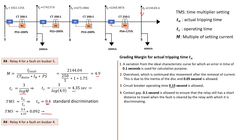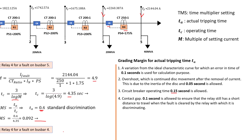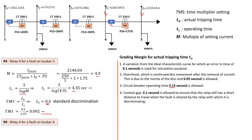Moving on, we go to relay four for a fault on bus bar four. The same relay must look out for a fault on bus bar four. For a fault on bus bar four we calculate the multiple of setting current again, but this time using the fault current on bus bar four. We find M equal to 5.166. From that we can also calculate tc, which equals 4.21 seconds.